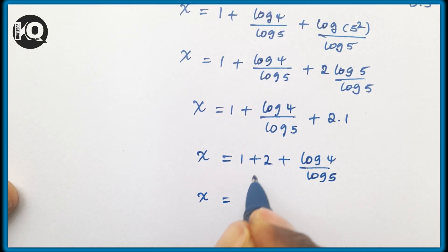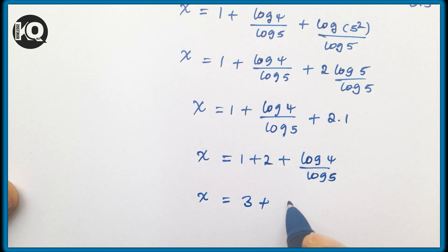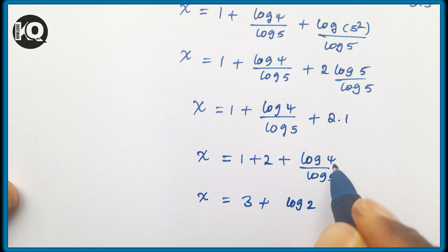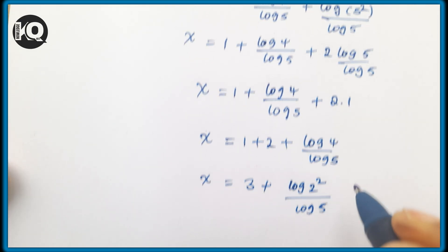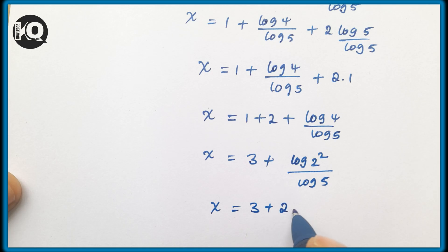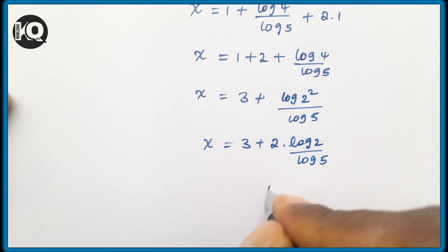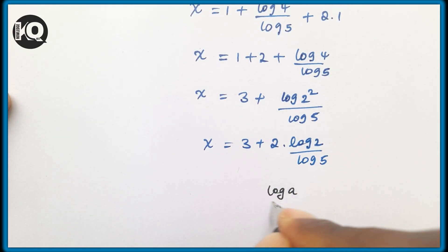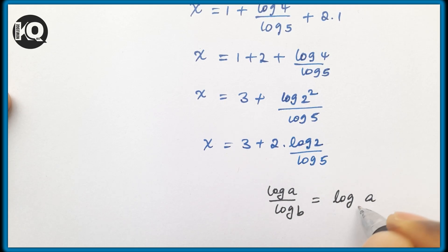So x = 3 + log(4)/log(5). We can rewrite log(4) as log(2²) = 2·log(2), giving x = 3 + 2·log(2)/log(5). Using the change of base rule — log(a)/log(b) = log base b of a — the term log(2)/log(5) becomes log₅(2). Therefore x = 3 + 2·log₅(2).